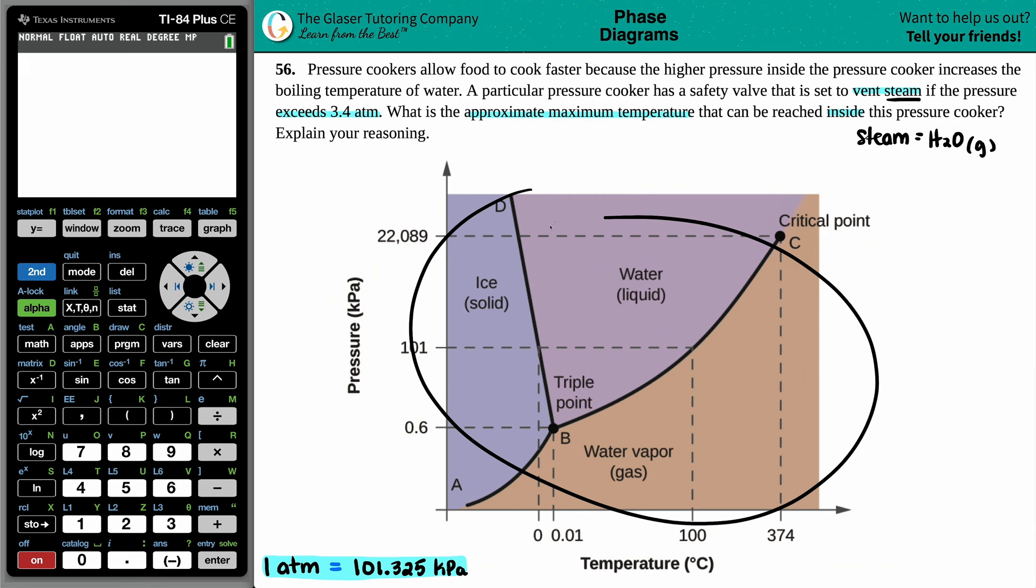Now on this phase diagram, I do have a y-axis that's in pressure. However, in order to use this diagram, I have to have my pressure in kilopascals. They gave us 3.4 atm, so before we even get to the diagram here, I first have to know what 3.4 atm is in kilopascals.